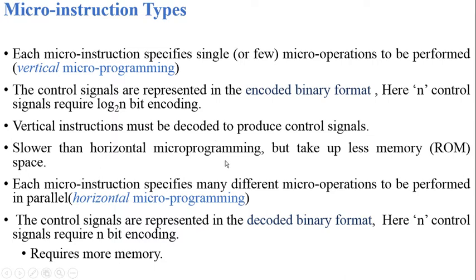This is slower than horizontal micro programming because, in order to activate the control signals, we need to perform some decoding operation in addition. So vertical micro programming is slower than horizontal micro programming, but it makes use of ROM memory effectively, because we need only log₂(n) bits — the minimum number of bits — for representing n different control signals.